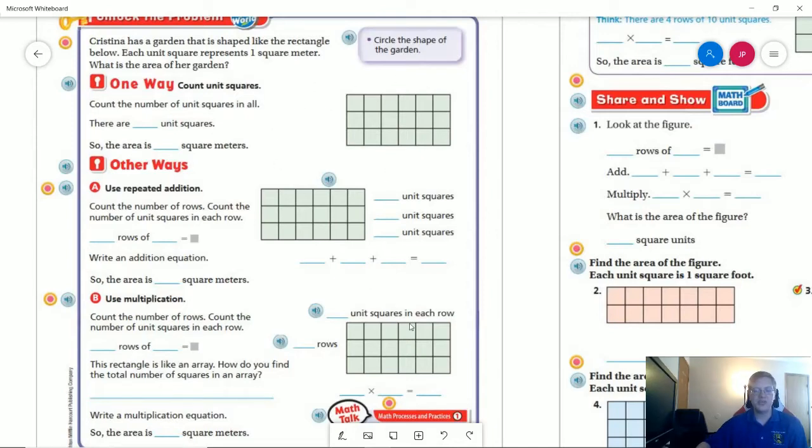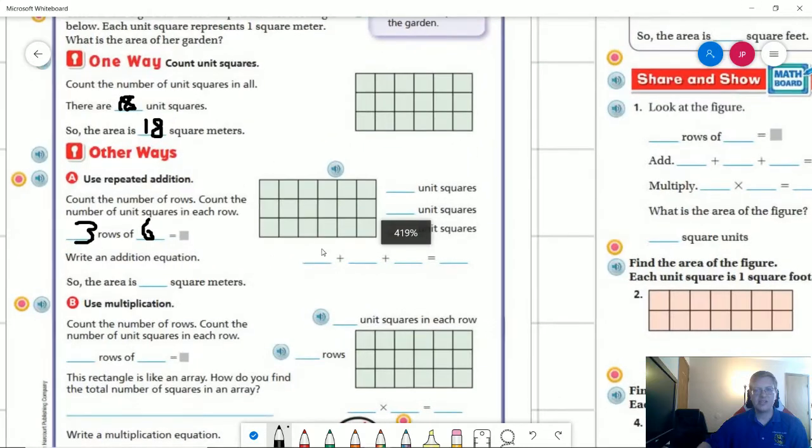So one of them is by counting unit squares. For all three examples, we're working with the same shape. The first thing that we could do is start by counting all of these up. If you want to go ahead and work on this part by yourself and pause the video, go ahead and do so. I've got three rows of six. That's going to give me 18. I can count each of them individually, and that's going to give me 18 square meters.